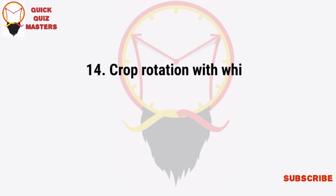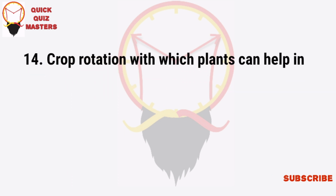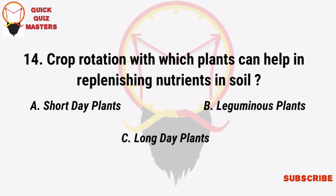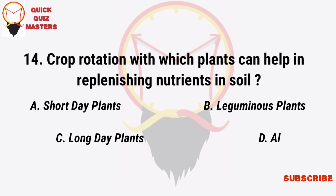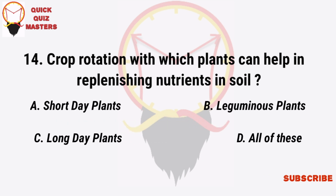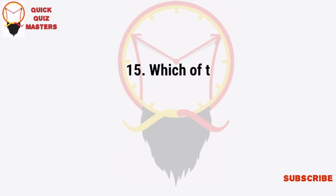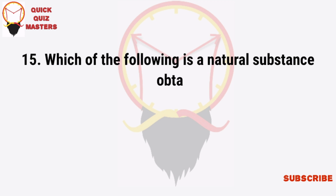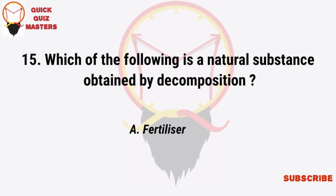Crop rotation with which plants can help in replenishing nutrients in soil? Short day plants, leguminous plants, long day plants, or all of these. Which of the following is a natural substance obtained by decomposition? Fertilizer, pesticide, manure, or feedicide.